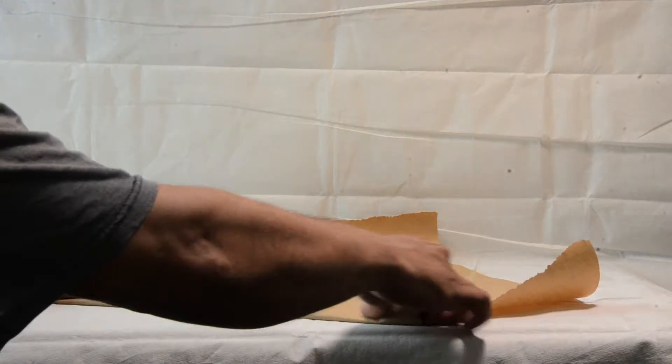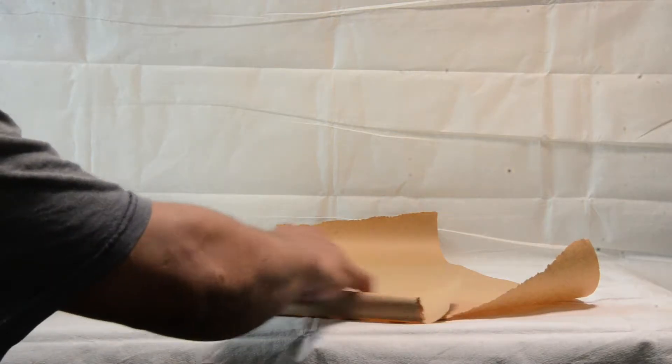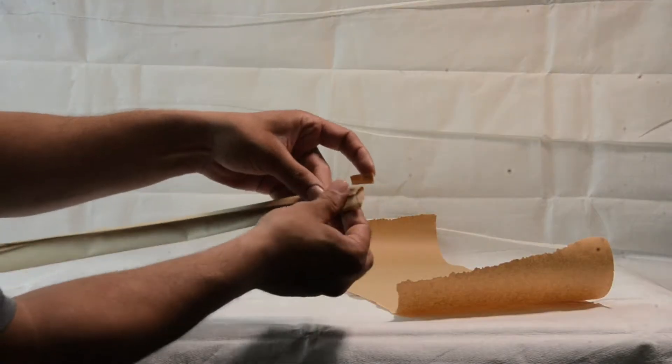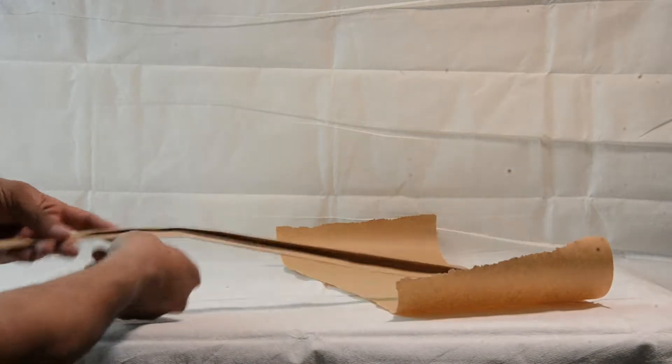Next we're going to want to take one of the halves and fold it in so that the edges meet in the middle. Afterwards we're going to tape the ends so that it stays in place.